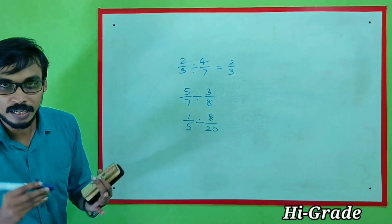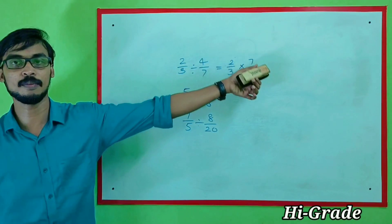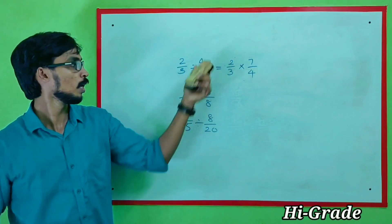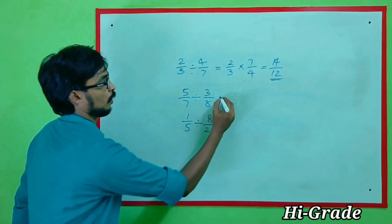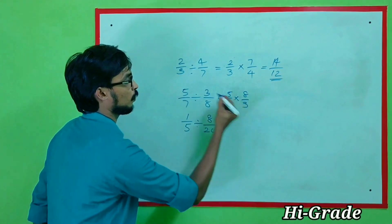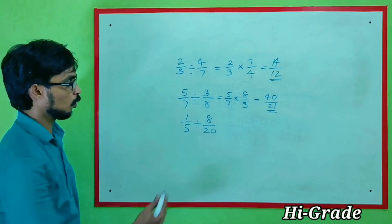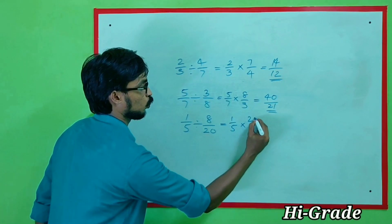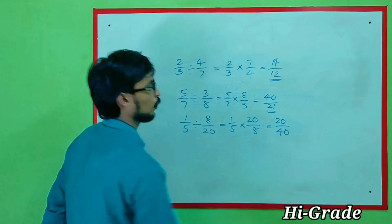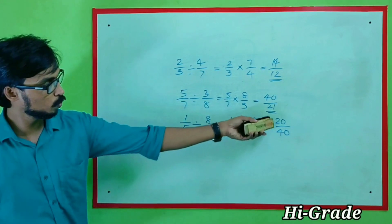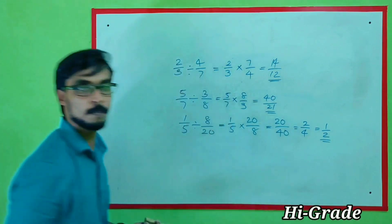If you divide it, you can multiply: 7 by 4 — 4 by 7 is equal to 7 by 4. How do we multiply? 2 by 7 is equal to 14 by 3 by 4. How do we multiply? 5 by 7 is equal to 8 by 3. 40 by 20. 1 by 5 is equal to 20 by 8; 8 by 20 is equal to 20 by 8. 1 into 20, 20 by 5 and 8. 20 by 14 is equal to 2 by 4. 1 by 2.